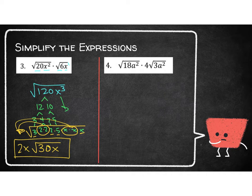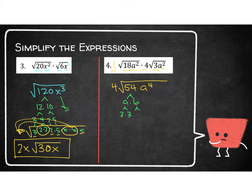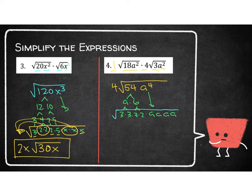Let's take a look at number 4. Outsides and insides go together. On the outside I have 1 times 4, which is just 4. On the inside I have 18 times 3, which is 54. And then a squared times a squared, which is a to the 4th. Now let's break all that down. 54 is 9 times 6; 9 is 3 times 3; 6 is 3 times 2. And the four a's look like a, a, a, and a — all underneath the radical sign.